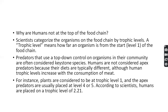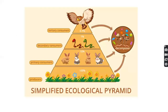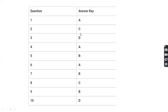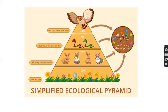Here is a simple ecological pyramid to show the 10% rule. Producers hold 100% of the sun's energy. Of that, only 10% is transferred to primary consumers. Of that 10%, only 10% — which is 1% of the original — goes to secondary consumers. From there, only 10% goes to tertiary consumers. At each trophic level, only 10% is shared. This is the 10% rule.